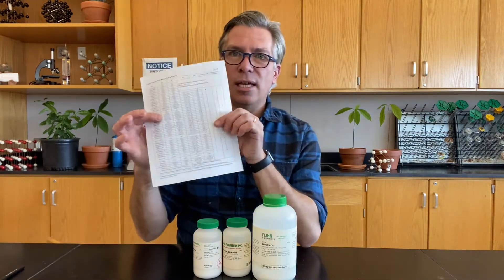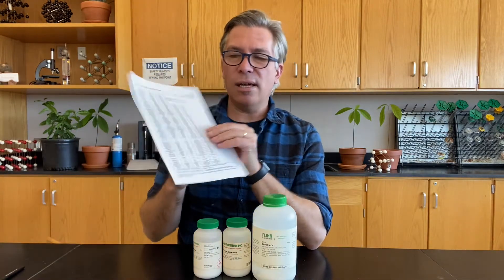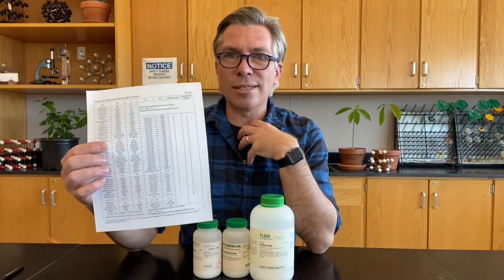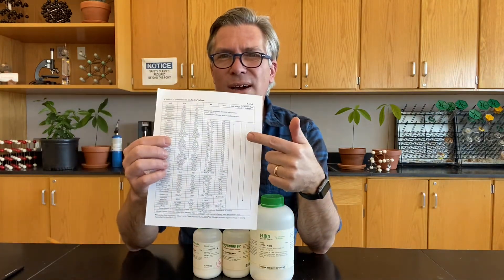You can usually find them on tables like this where they tell you their Ka values, and those are all experimentally determined. Some of you when you look at a chart like this start to have heart palpitations and start wondering how is it that chemists figure those numbers out?